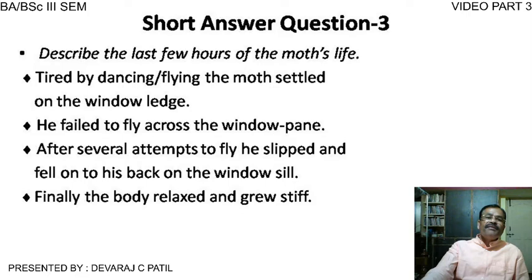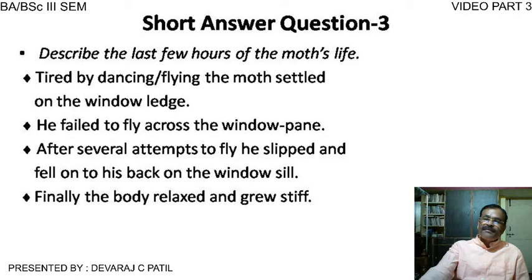'Describe the last few hours of the moth's life.' Tired from dancing and flying, the moth settles on the window ledge and fails to fly across the window pane. It makes several attempts to fly but slips down each time. Finally it falls down on its back, grows stiff and relaxed, and the fight ends — the struggle is over.